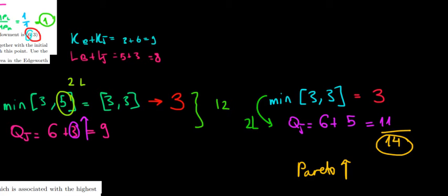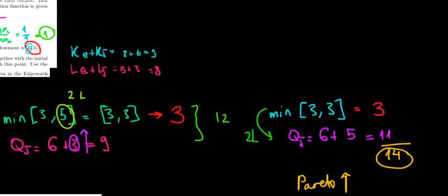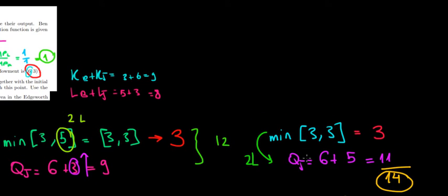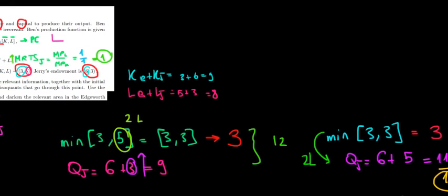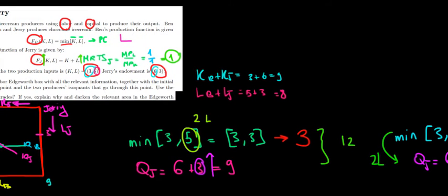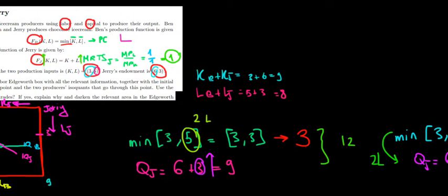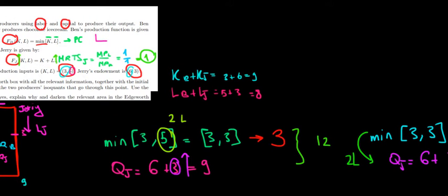Let's suppose now that we have only one producer. If we have one producer, there's going to be an allocation of resources only either to the production function of Ben or to the production function of Jerry. To see which one is going to be better, let's just compare the results.